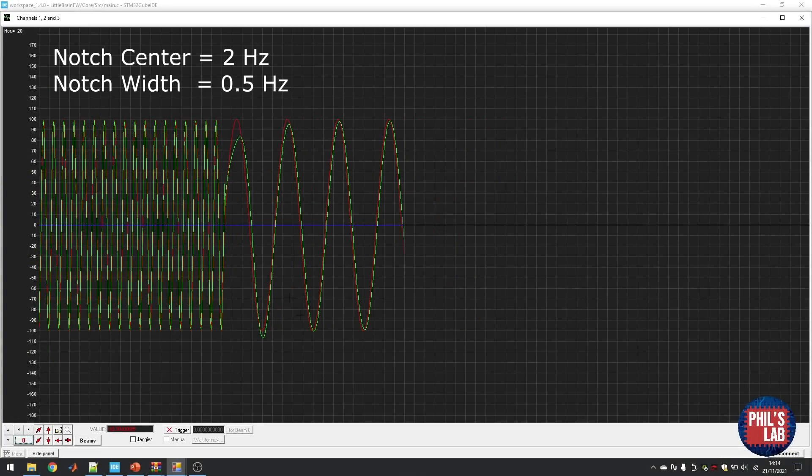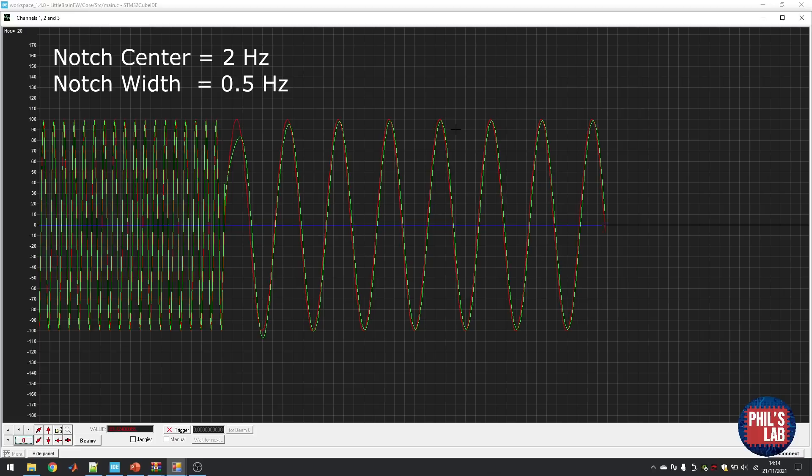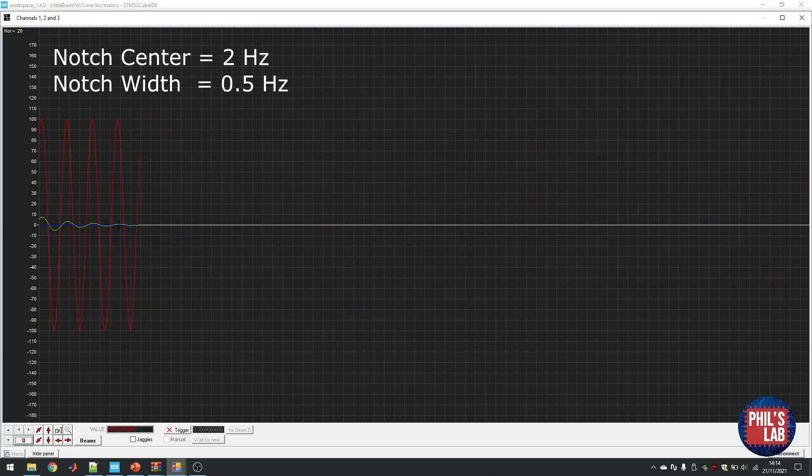So here at a frequency of one hertz, the filter is passing pretty much all the components. We have a slight phase shift, but that's quite normal. Now we're going to go over to two hertz, which is the notch center frequency of this filter. After initial transient, the filter output dies down and we can see we have almost infinite attenuation of this red input signal.